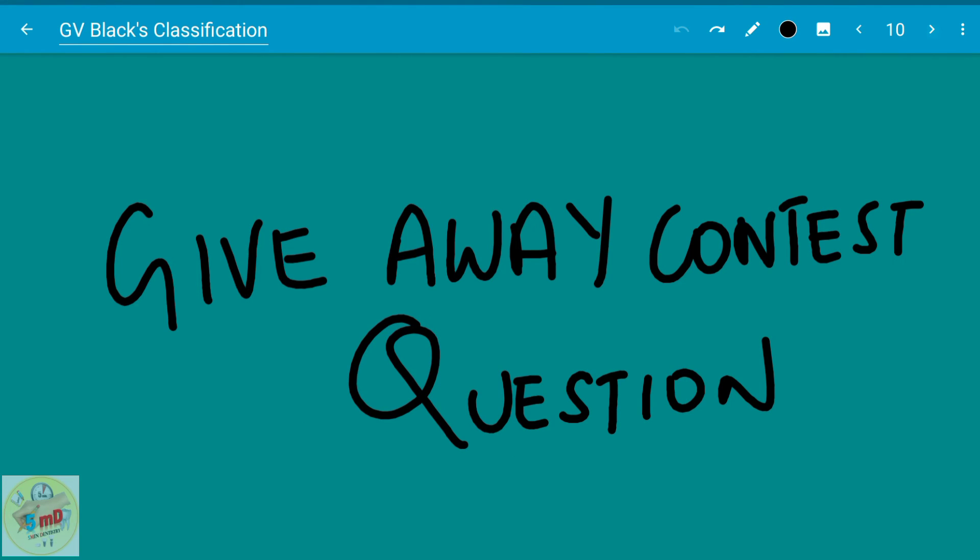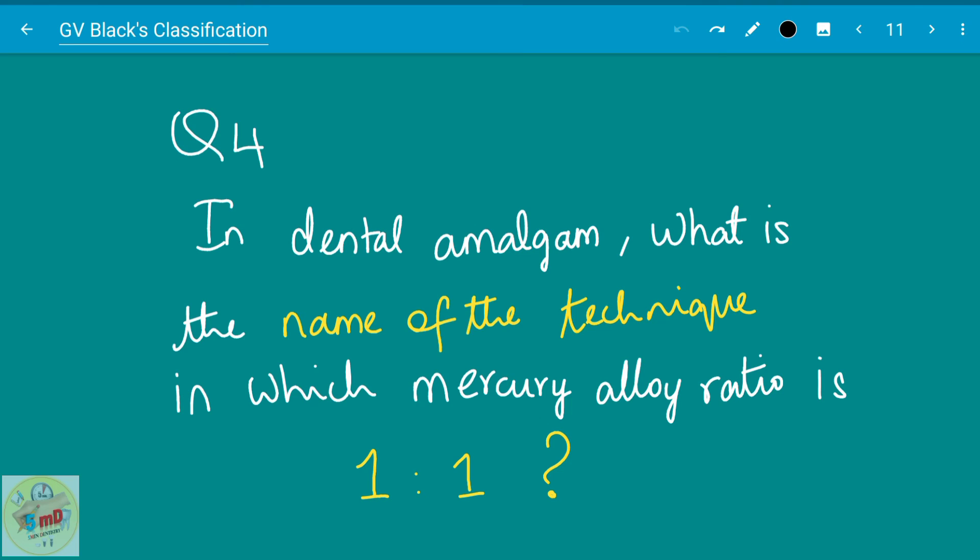So let us move to the giveaway contest question for this video. As you all know, we are conducting a giveaway contest for handbook of important questions, especially for second year BDS. Anyone can participate, but the book will definitely be useful for those who are in second year BDS and it will contain questions on all the subjects of the second year BDS. So the fourth question is: in dental amalgam, what is the name of the technique in which mercury alloy ratio is one is to one? So you just collect the questions and send the answers before June 10 to us in a single mail.